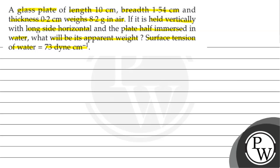So when this plate is immersed in water, its half part is immersed in water and the other half is outside in the atmosphere. We need to find the apparent weight of the glass plate. First, let's identify which concept will be used here. The concept here is apparent weight.